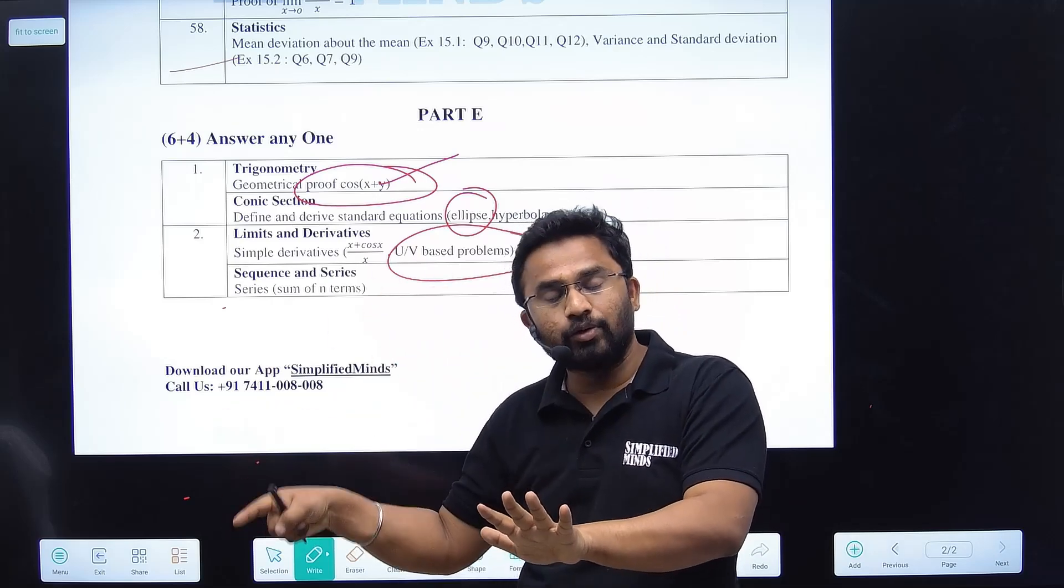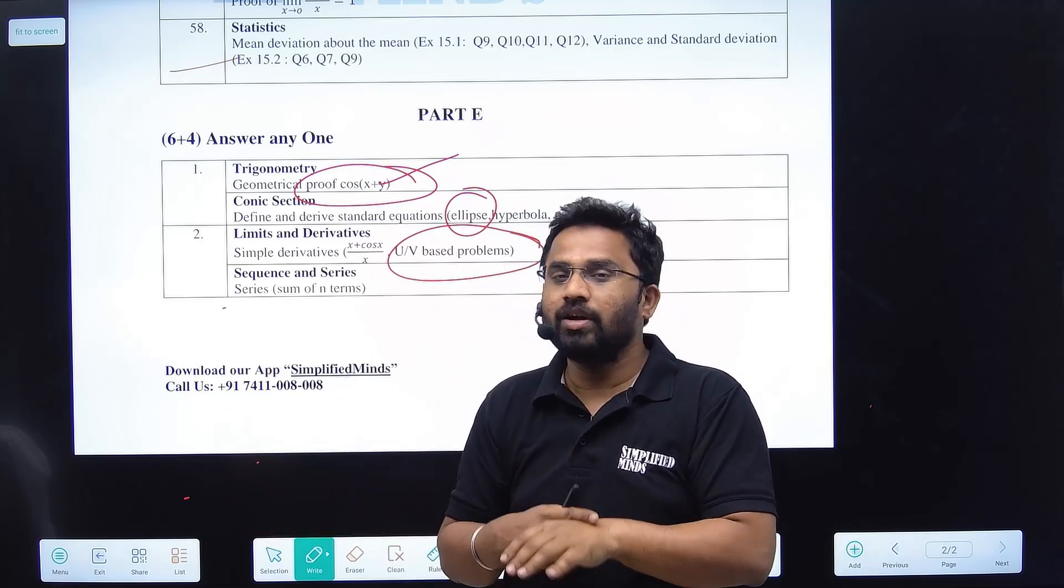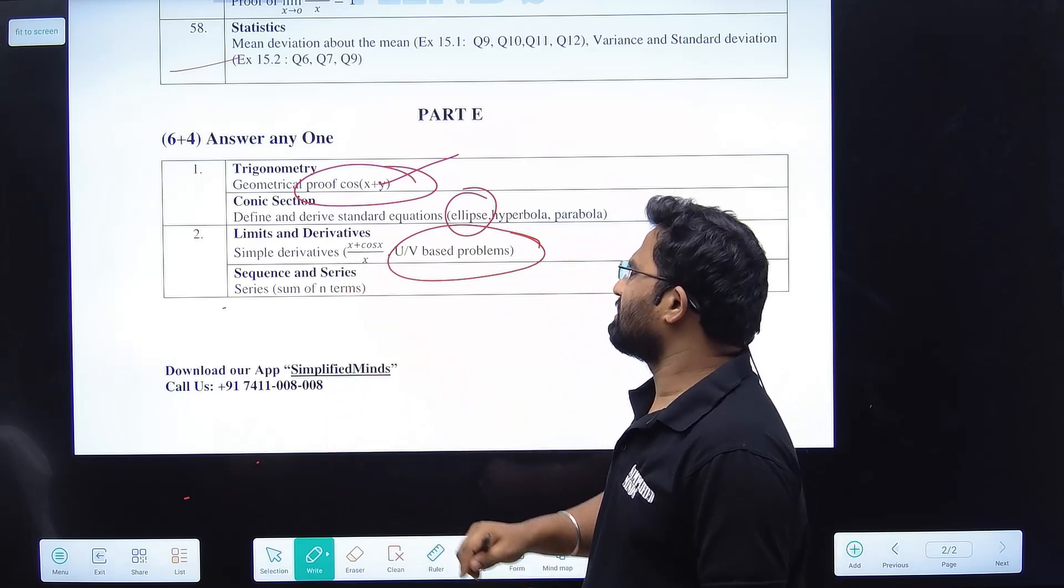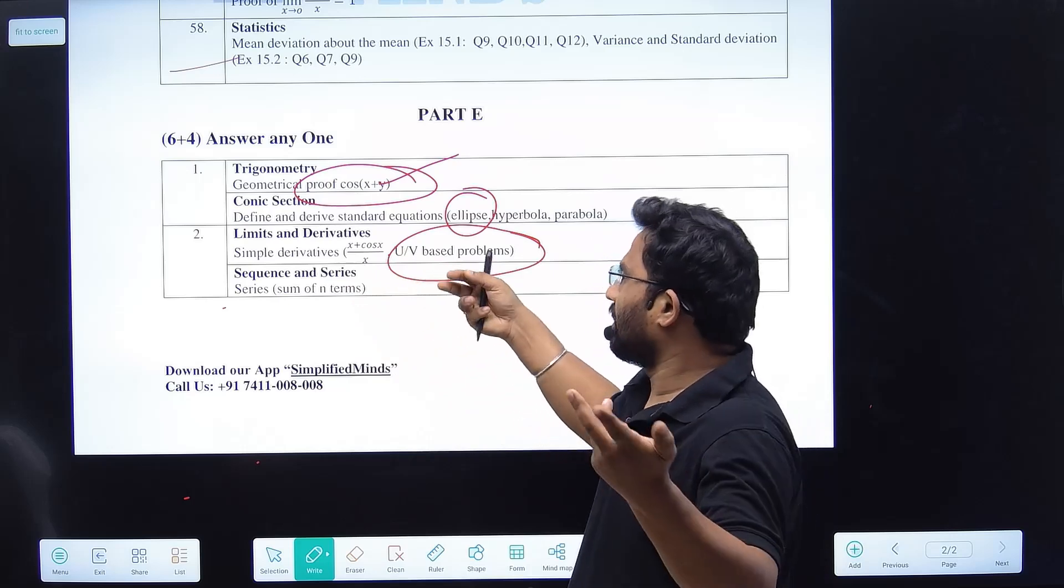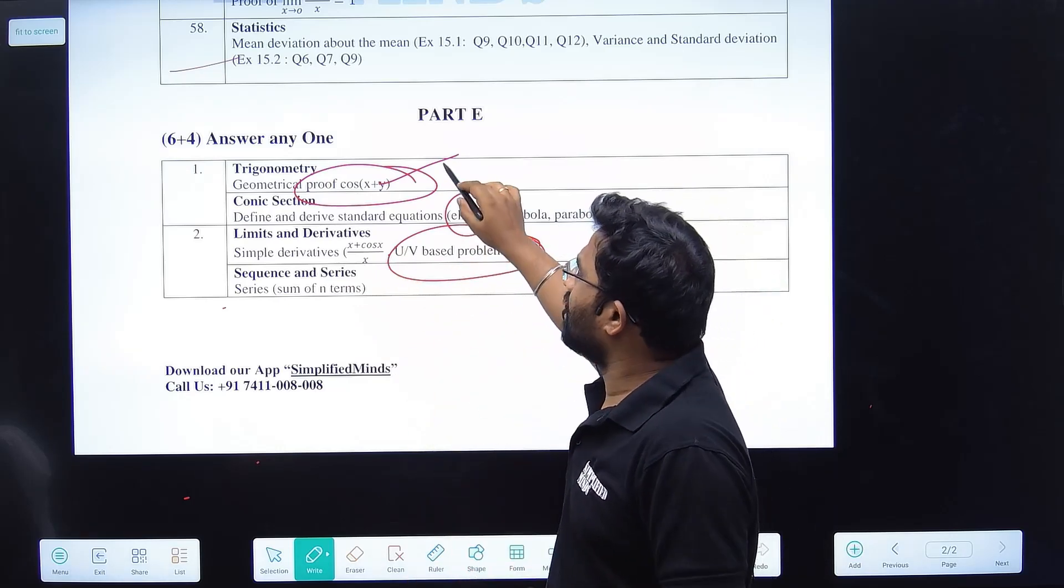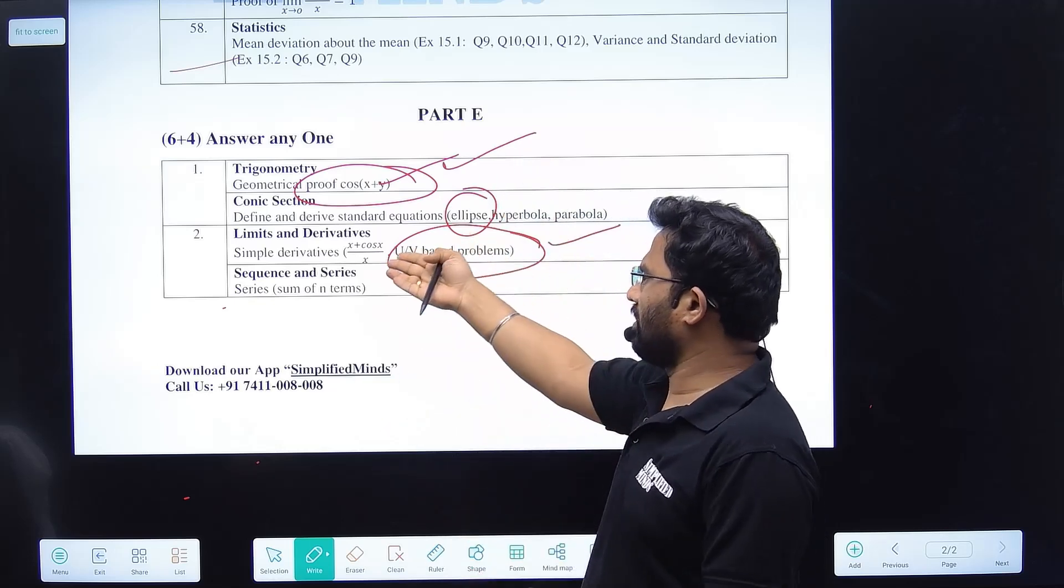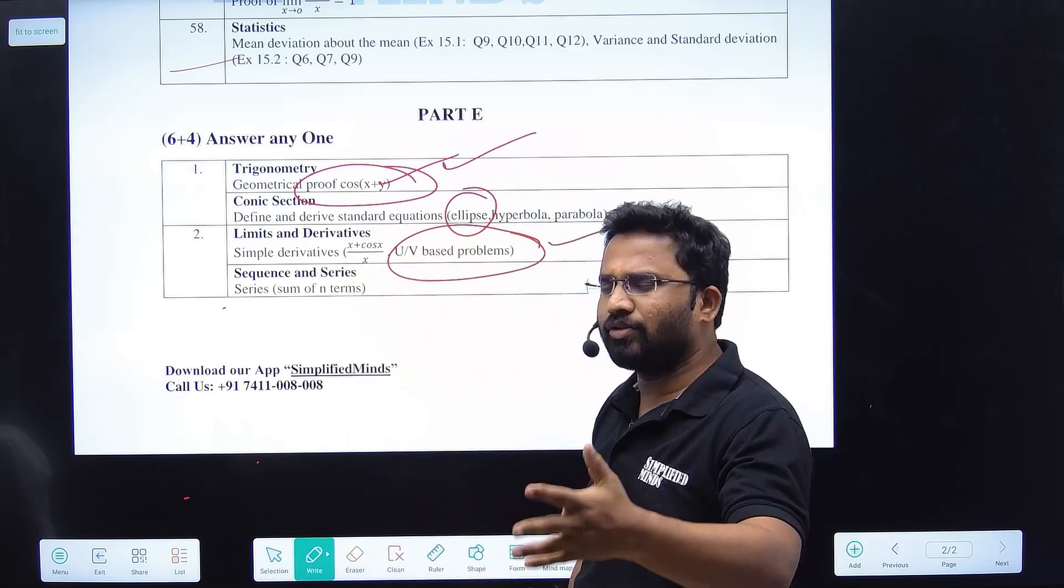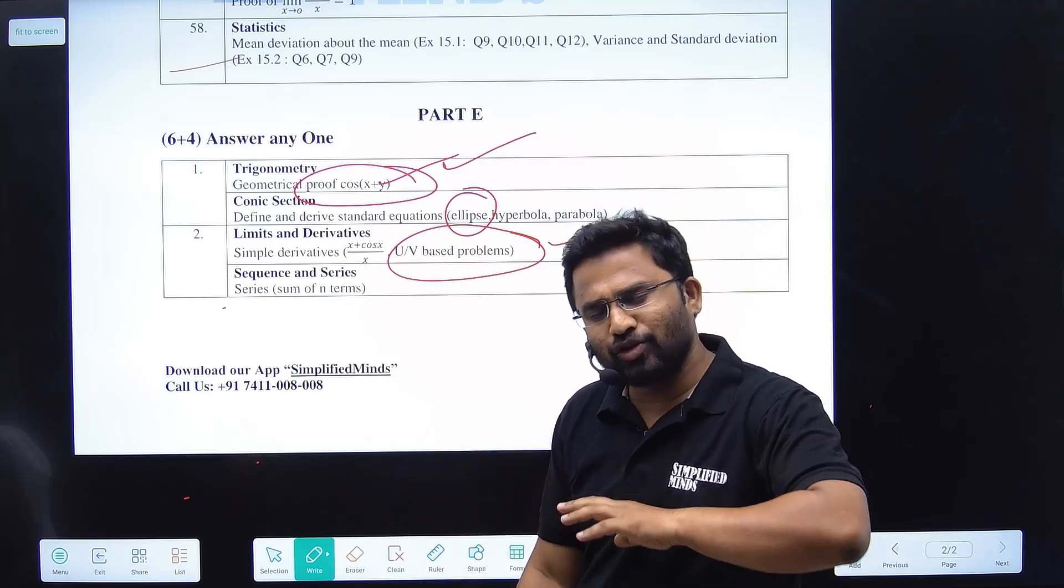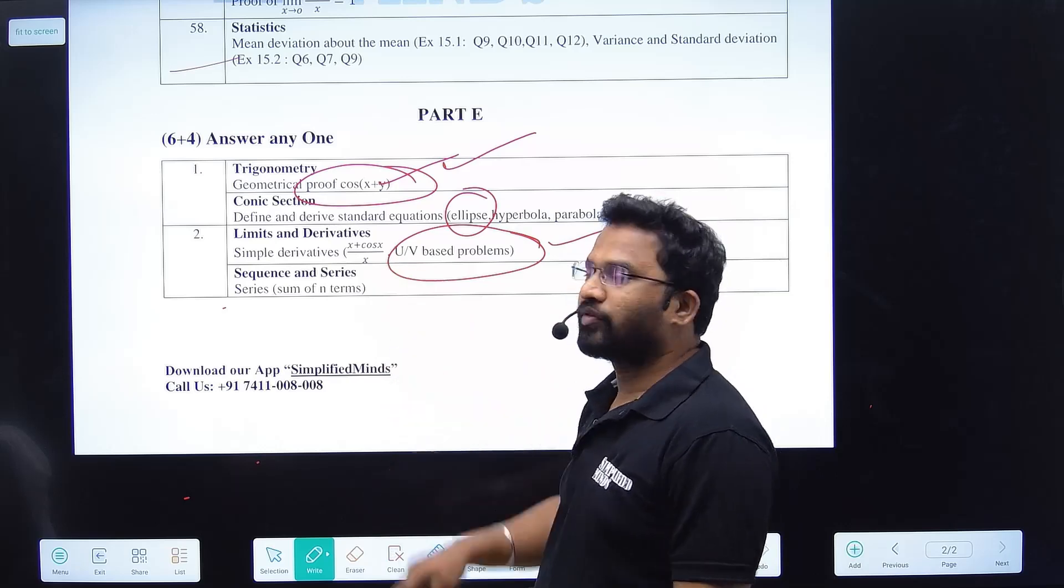Sequence and series - usually sum of n terms is asked, but this is the most easiest to score. Geometrical property is simple derivation. This is simple formula. U by V rule - U prime V minus V prime U divided by V squared. If you know this much, you can answer most of the questions very easily.